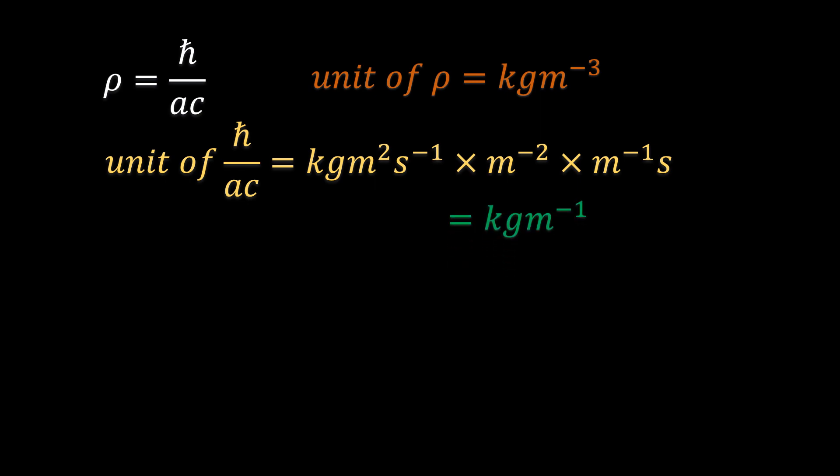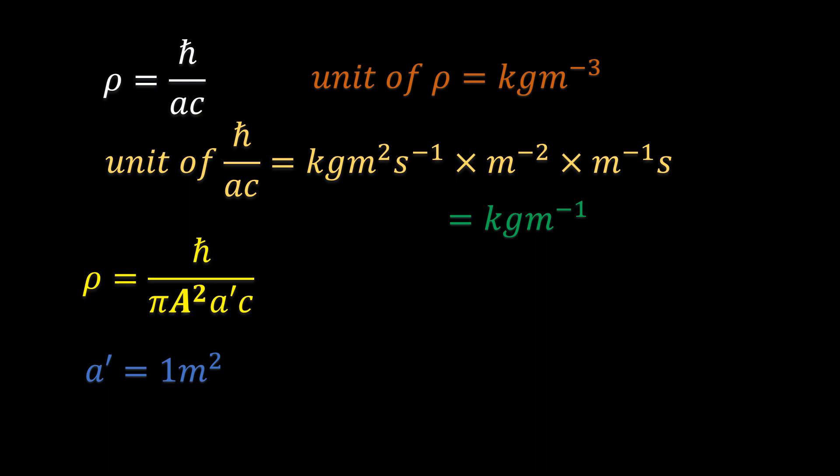This simplifies to kilograms per meter. We are missing a meter squared in the denominator for this to be the unit of density. If you remember, in part 1 there was an area term A', which represented the area enclosed by one cycle of the wave, and rewrote the density of space as h-bar over this. We chose A' to be equal to 1 because it didn't change the value of the energy. That is why our final form of the density equation did not contain it. However, its unit — which is meter squared — still remains, even though the magnitude is 1.